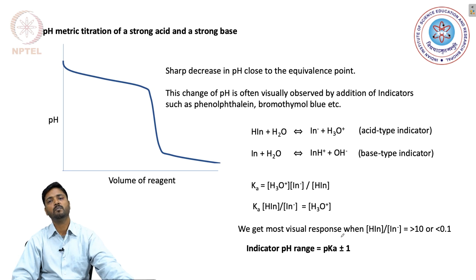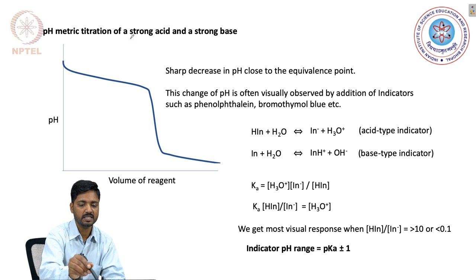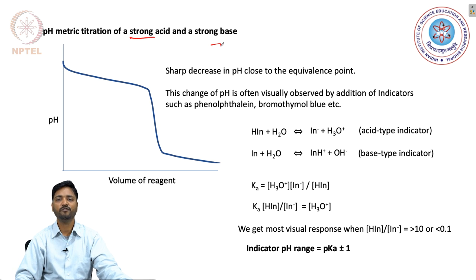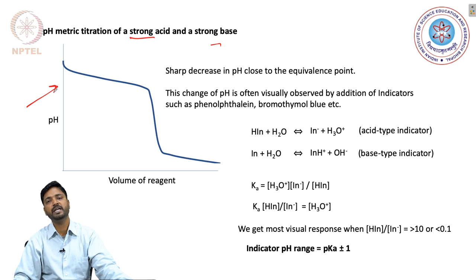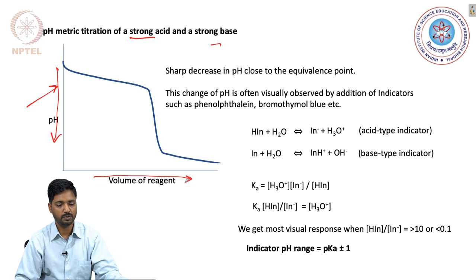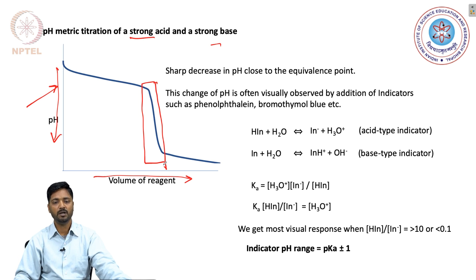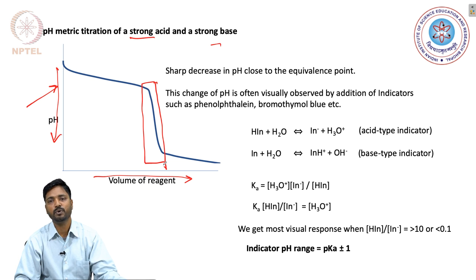Let us look at some pH metric titrations that can be performed using acids and bases. As our first example, we will be considering the titration of a strong acid with a strong base. What I have plotted here is the change in the pH of the solution of the base to which acid has been added. The pH keeps decreasing as more and more acid is added, and we observe that the change is maximum in this regime, where the equivalence point will be lying.